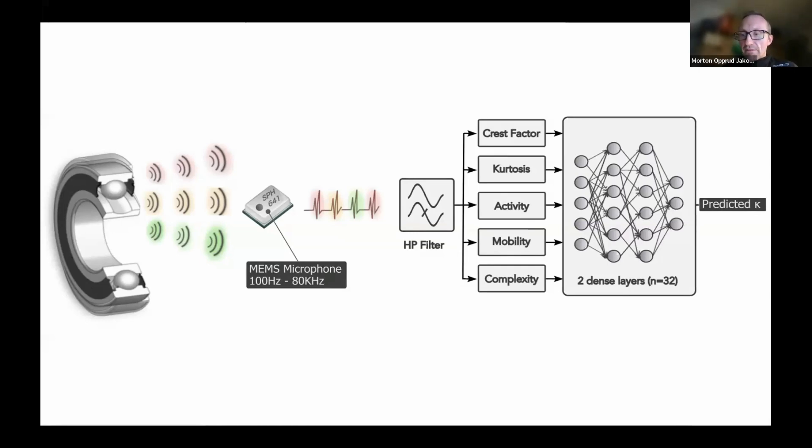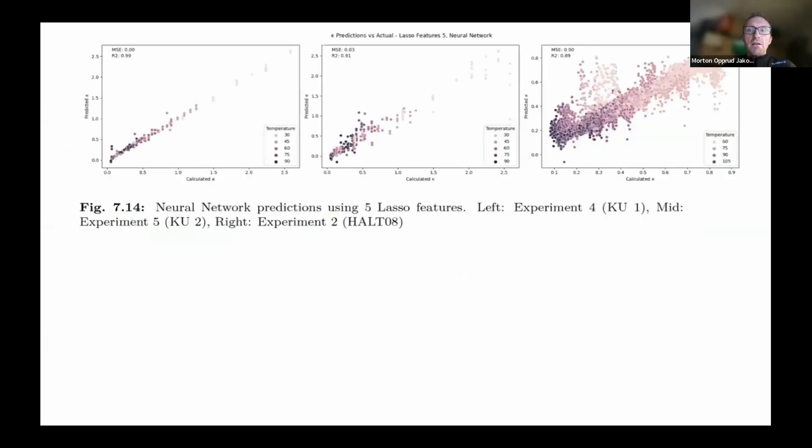And so to evaluate this, we need some kind of reference. And in our case, a test rig is available where temperature and speed, geometry of the bearings, and the viscosity of the lubricant is all known. And that's typically something you don't know in detail for an industrial machine. But in this case, it can be used to establish a reference value of this kappa describing the lubrication conditions. And then I've basically trained the neural network on a month of data captured under different conditions.